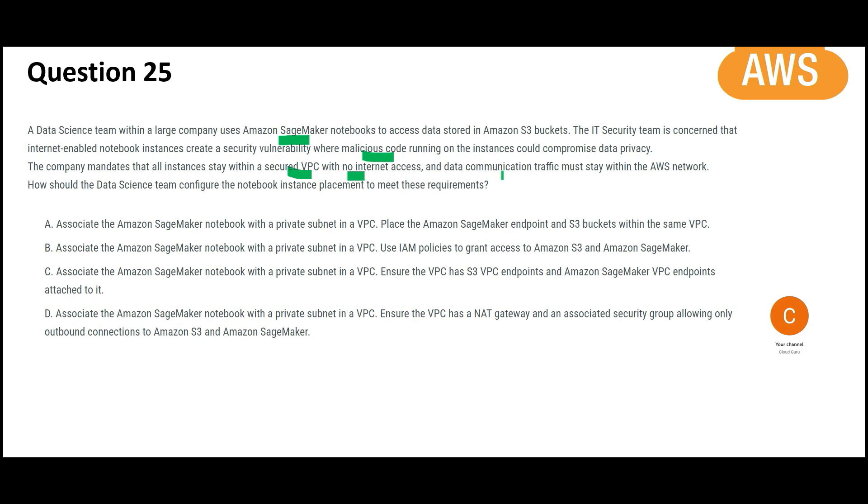And data communication traffic must stay within AWS should not go via internet. The moment I see this, I can only think about endpoints. In this case, my answer would be the option C where I will associate SageMaker notebook with a private subnet in a VPC. I will keep it private because it should have no internet access and it should be in a secured VPC. Since it says it should be secured VPC, I am securing it by putting a private subnet in a VPC.